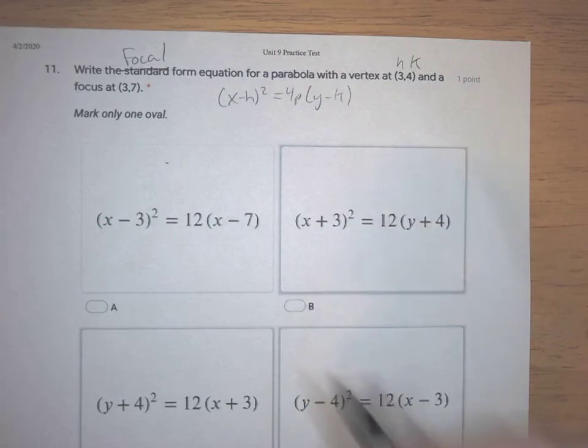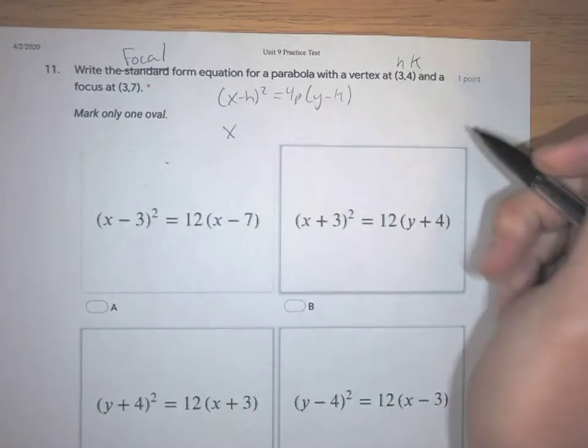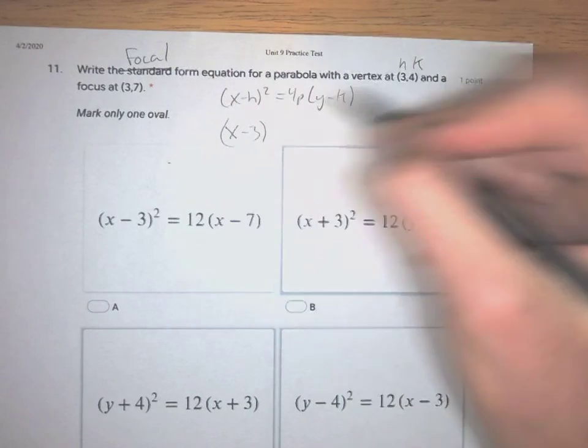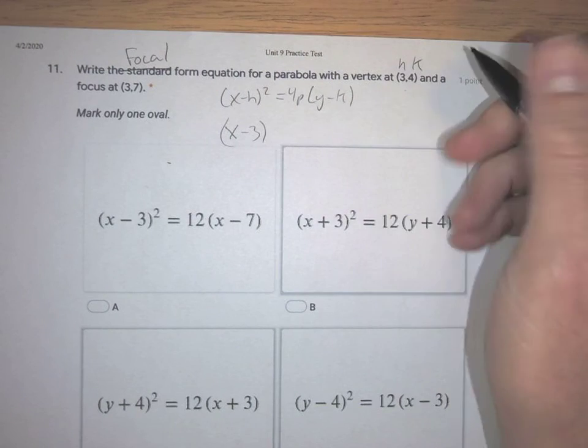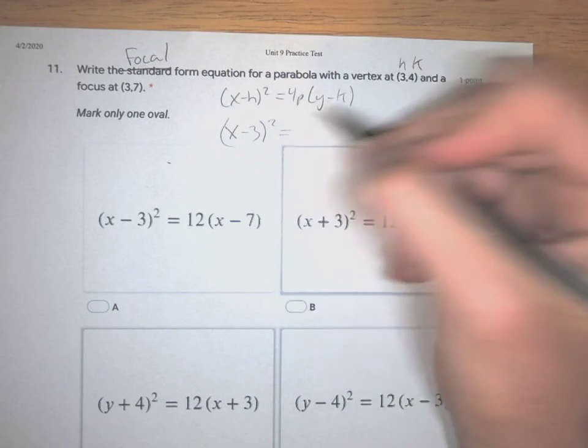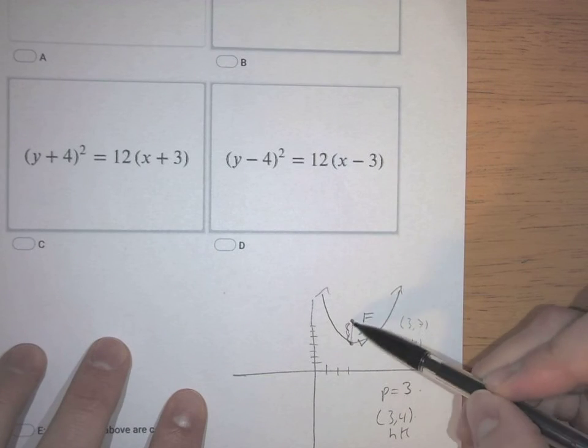We just got to fill in those pieces. So x minus h would be (x - 3), because we know the vertex, again, is (h, k), equals 4p. Now we know that p is 3, remember, because we went down here and we're like, oh, these are 3 apart.